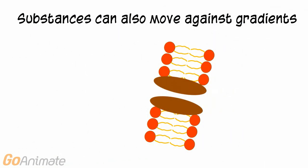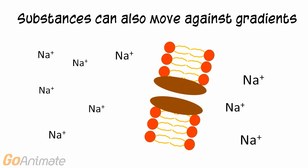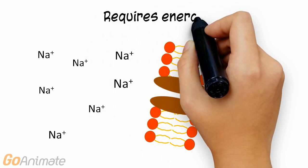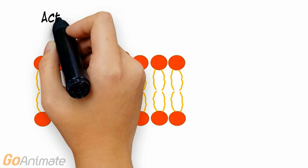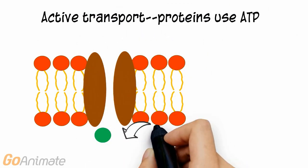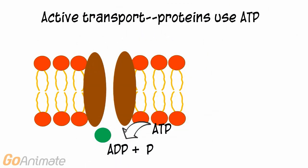Substances can also move against gradients. Here we have more sodium outside of the cell than in. If sodium moved by facilitated diffusion, it would move into the cell. However, energy can be used to move sodium against its gradient, or outside of the cell. Substances can move against their gradients using active transport proteins. These proteins use ATP for energy.